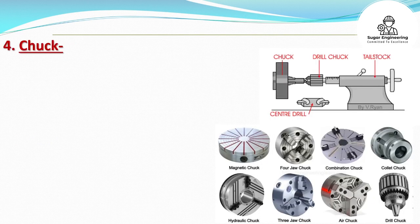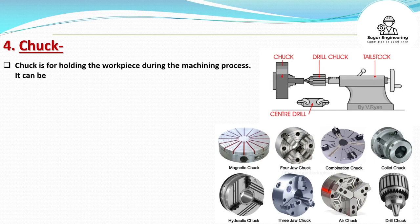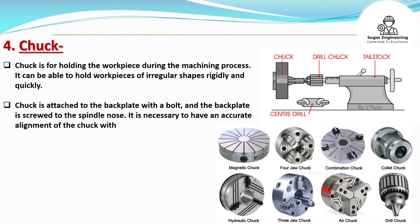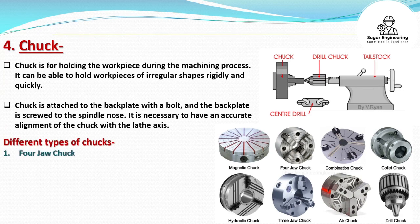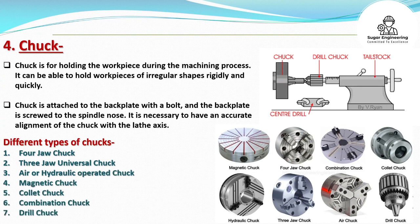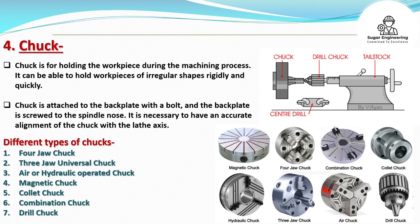Chuck is for holding the workpiece during the machining process. It can hold workpieces of irregular shapes rigidly and quickly. Chuck is attached to the back plate with a bolt, and the back plate is screwed to the spindle nose. It is necessary to have an accurate alignment of the chuck with the lathe axis. Different types of chucks include: four jaw chuck, three jaw universal chuck, air or hydraulic operated chuck, magnetic chuck, collet chuck, combination chuck, and drill chuck.